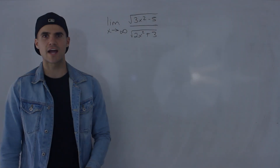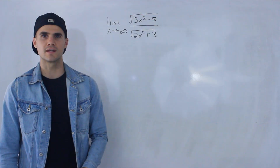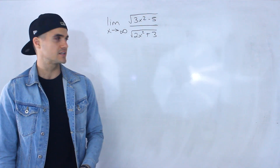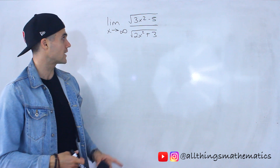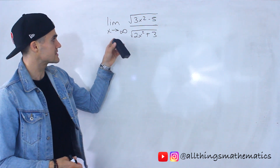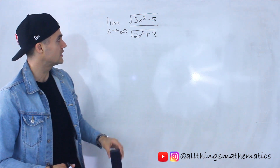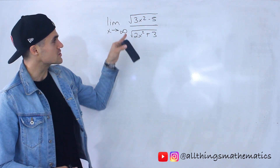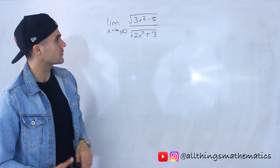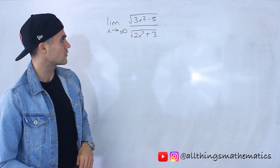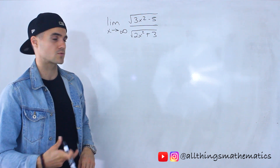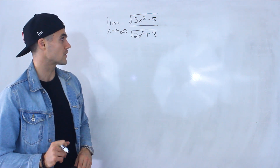Welcome back, Patrick here. Moving on to the next example dealing with L'Hôpital's rule. We have this limit as x approaches infinity of the square root of 3x squared minus 5 over the square root of 2x squared plus 3.